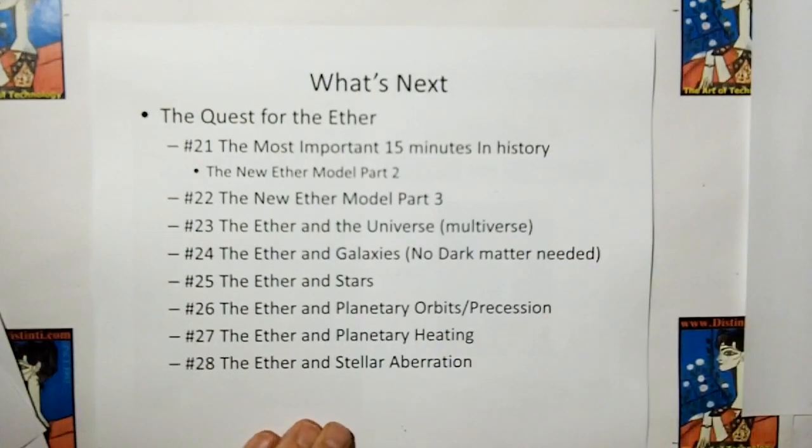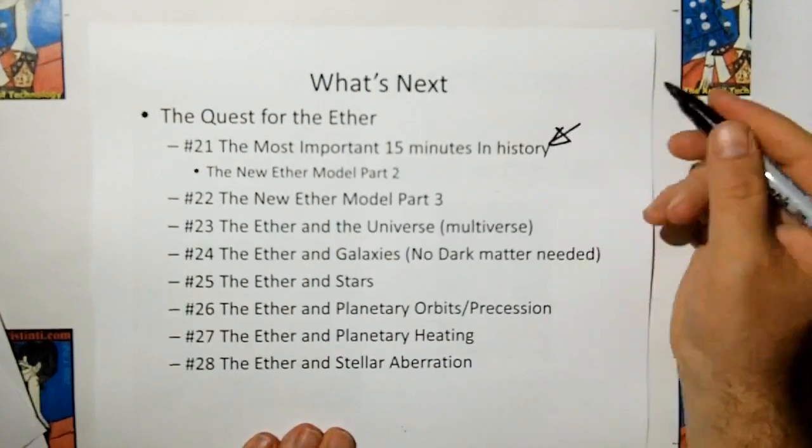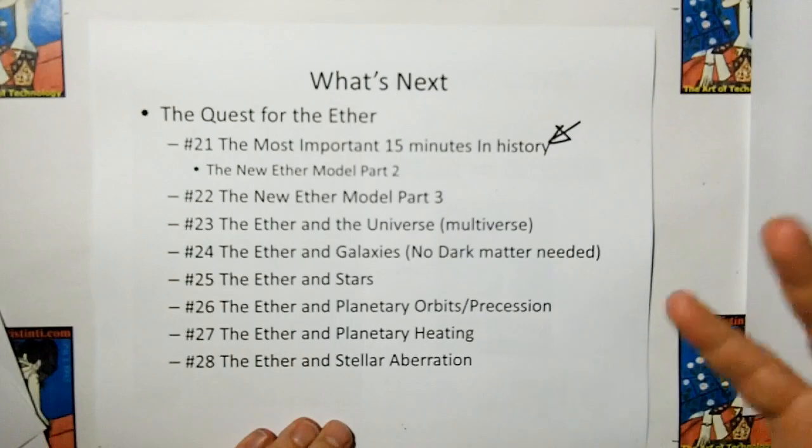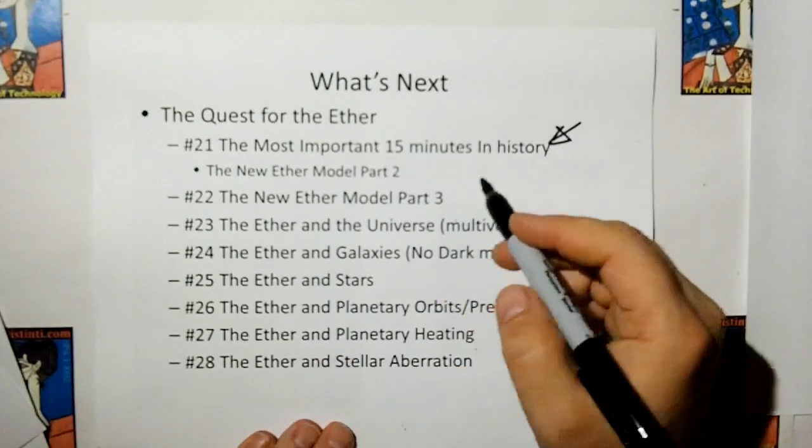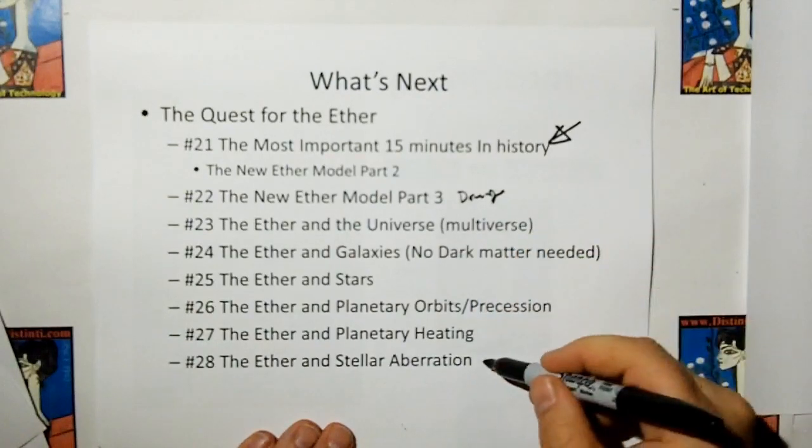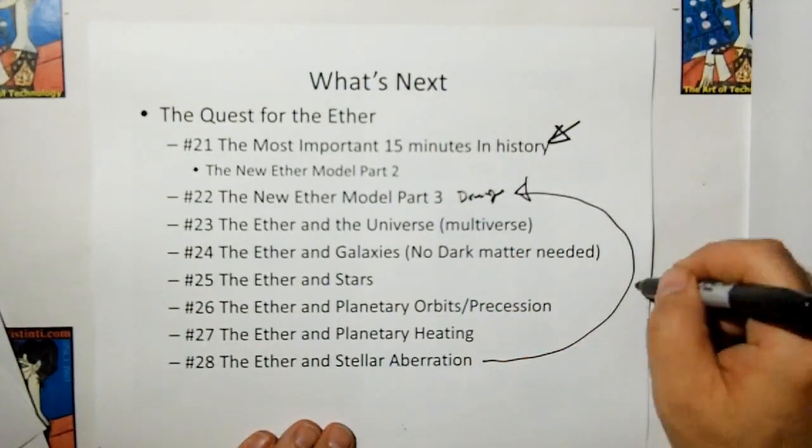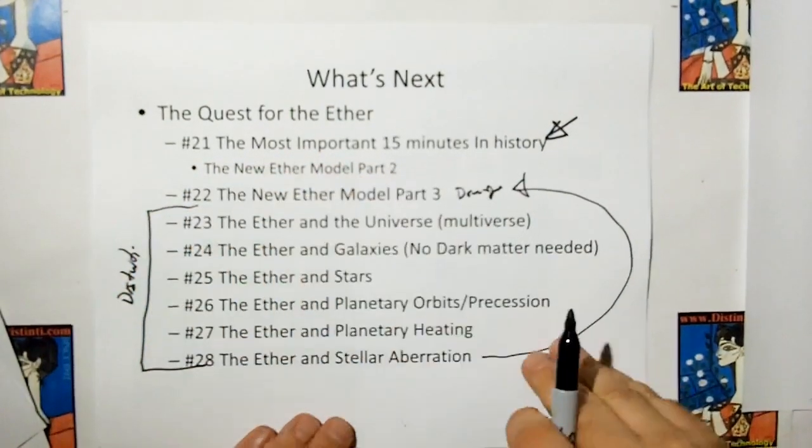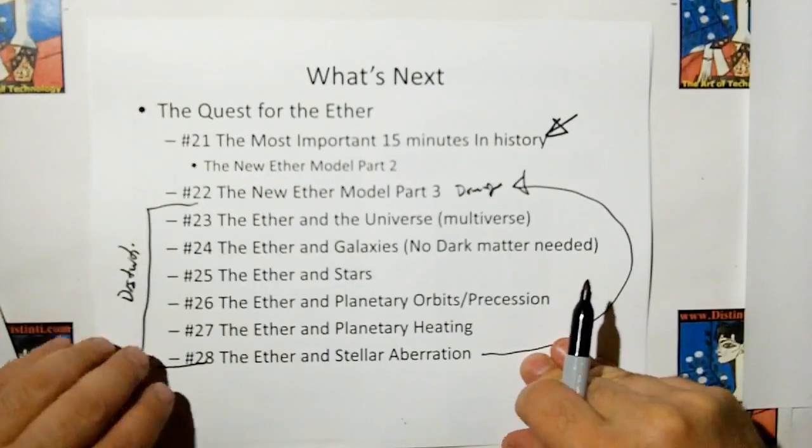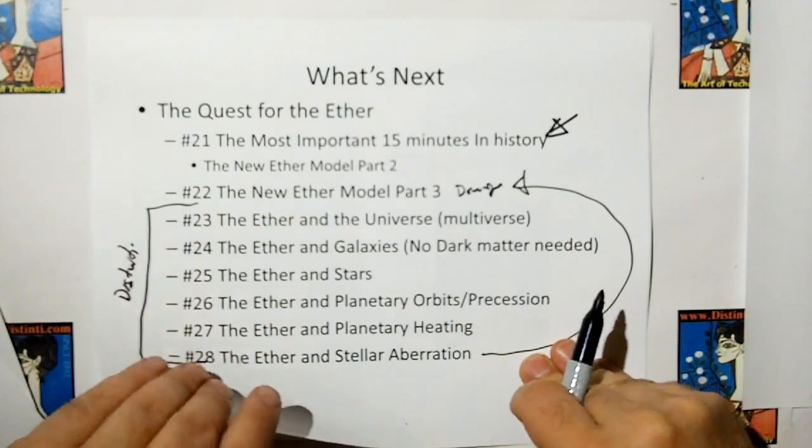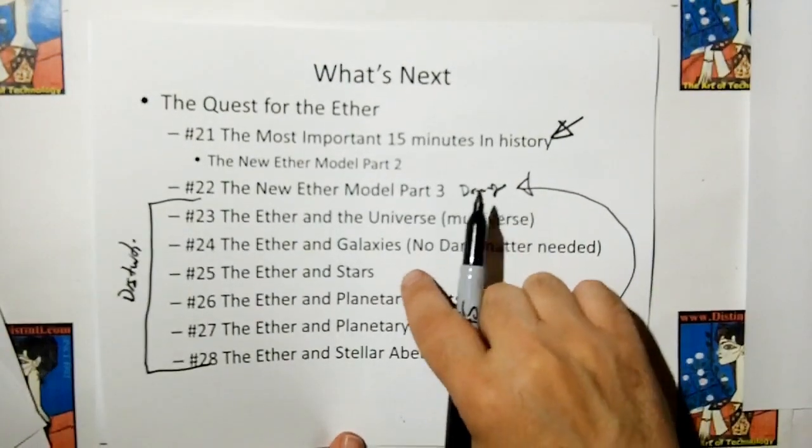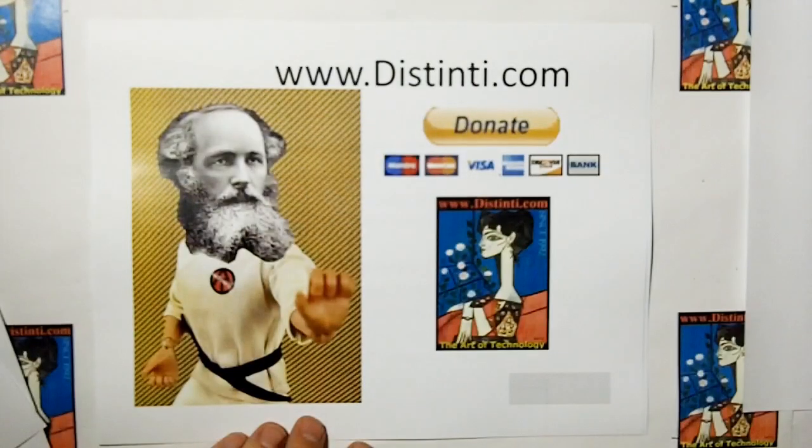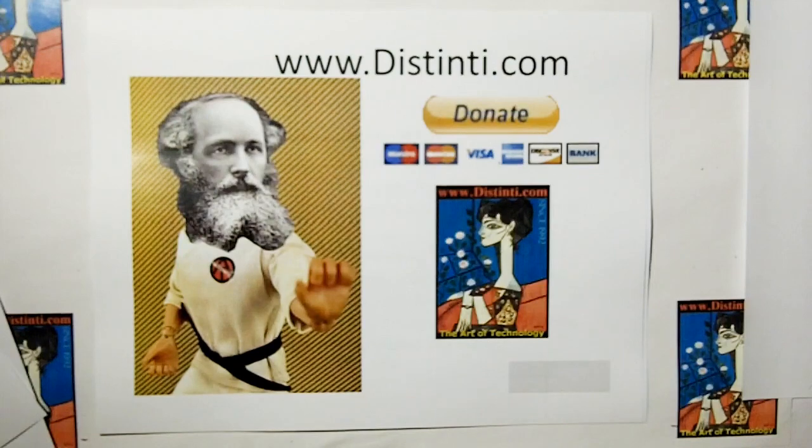So, what's next? Video number 21 is the most important 15 minutes in the history of science. We're going to show you, I believe we're going to show you, and I say we, it's me. I always talk in terms of we, it sounds like I'm a big company. It's just me. Then, we're going to get into ether dragging. I might combine stellar aberration into this. I don't know yet. I left it down here, so I could put it in there. But, this is Distinti's universe. That's fun stuff. There's very little math. But, I'm going to show you a completely different universe than what you're thinking about. If the ether is right, then we have most of the stuff about stars, galaxies, and universe, planetary orbits. It's complete nonsense of what we... Thank you for donating. Don't miss the next video. Thank you.